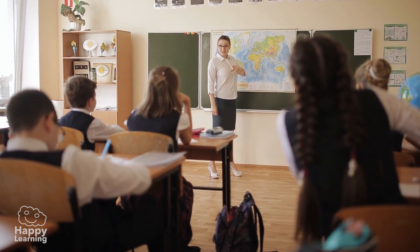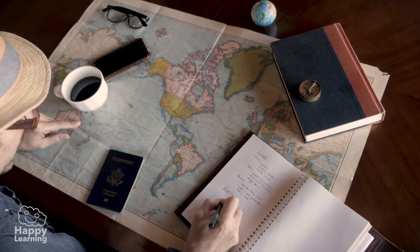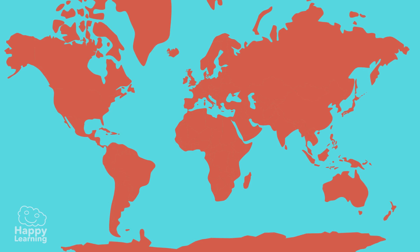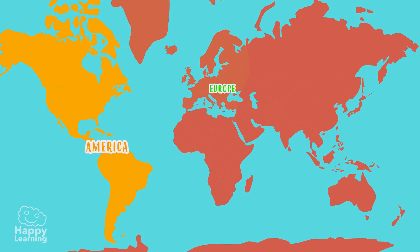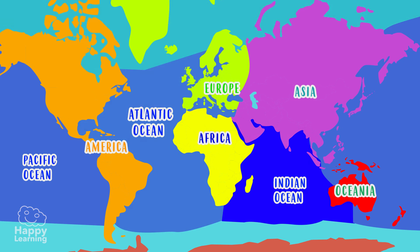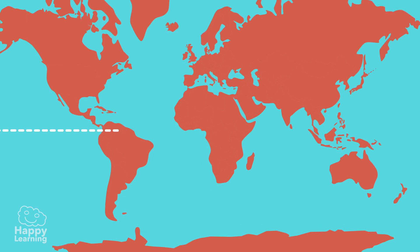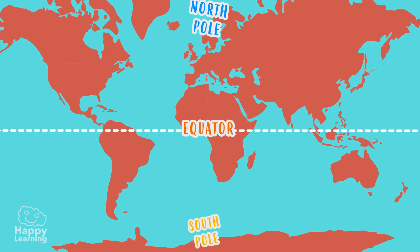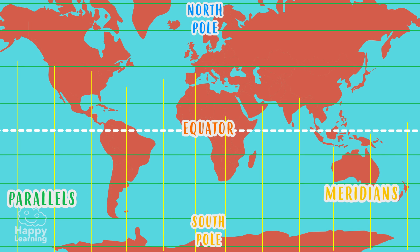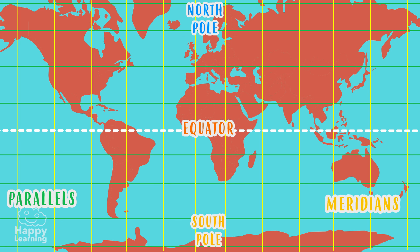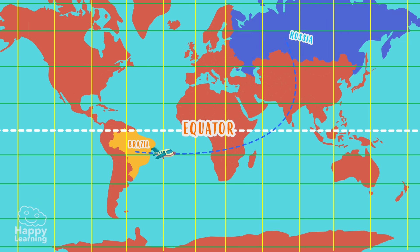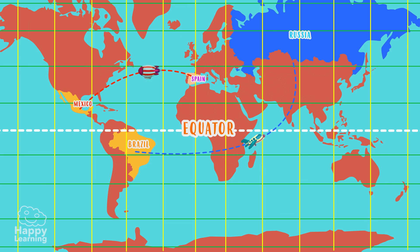The planisphere is another way of representing our planet. It's a map of the entire surface of the Earth and allows us to see the continents and the oceans, but on a flat surface. On a planisphere we can also see the equator, the poles, and also the parallels and meridians — which are the lines into which the Earth is divided to help us calculate distances. So we can get a clearer idea of the distance between Brazil and Russia, or between Spain and Mexico, just by taking a quick look at it.